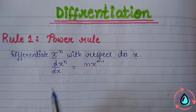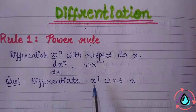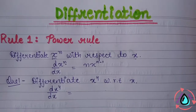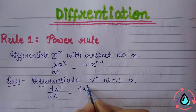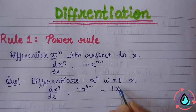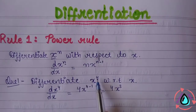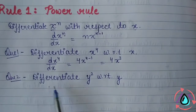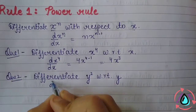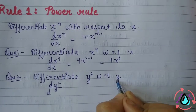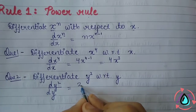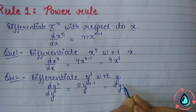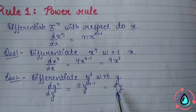Let's look at an example. Differentiate x to the power 4 with respect to x: d(x^4)/dx. The power 4 comes forward, x stays as it is, and the power reduces by 1 (4−1=3), giving us 4x³. So 4x³ is the derivative of x^4. Next, differentiate y² with respect to y: d(y²)/dy. The 2 comes forward, power reduces by 1 (2−1=1), giving us 2y.